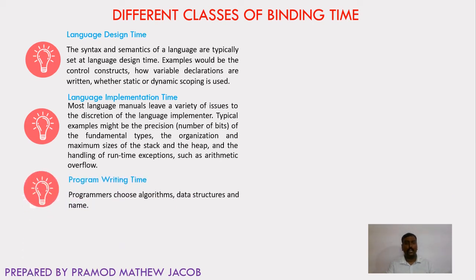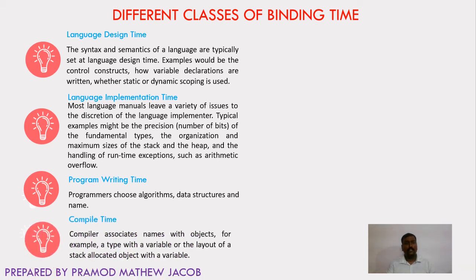The third class is program writing time, where programmers choose the algorithms, data structures, and names. The fourth is compile time — during compilation, the binding of various names with objects, methods, etc. takes place. For example, for a static variable the stack is allocated, and for dynamic variable allocation the heap memory is allocated.